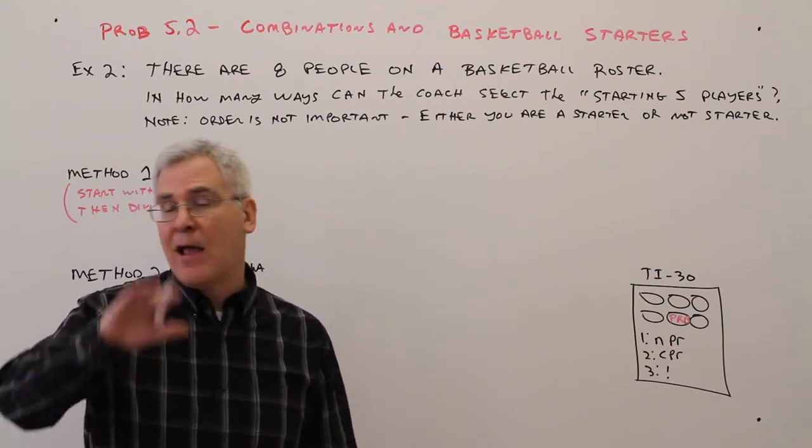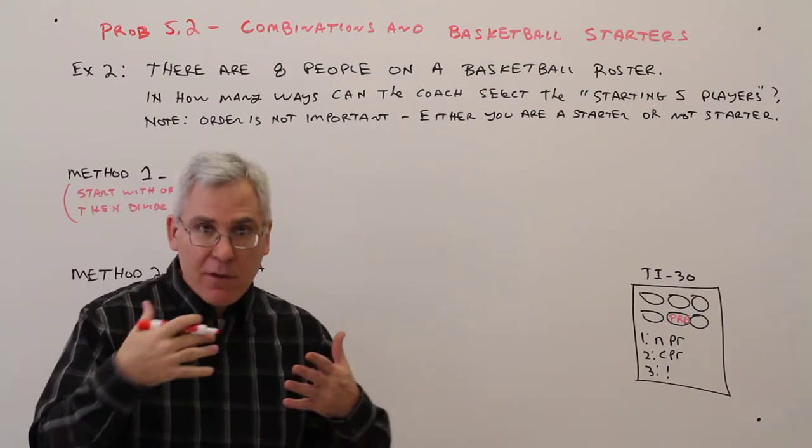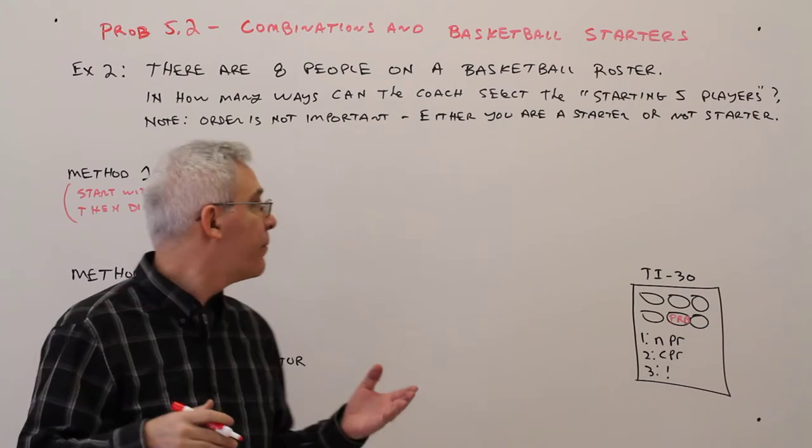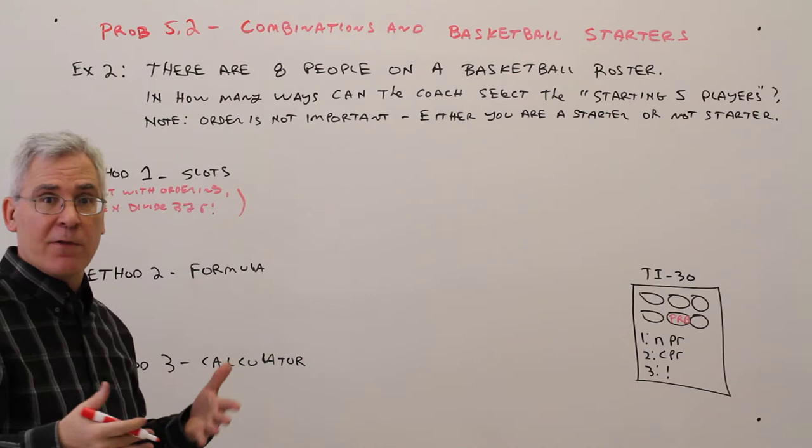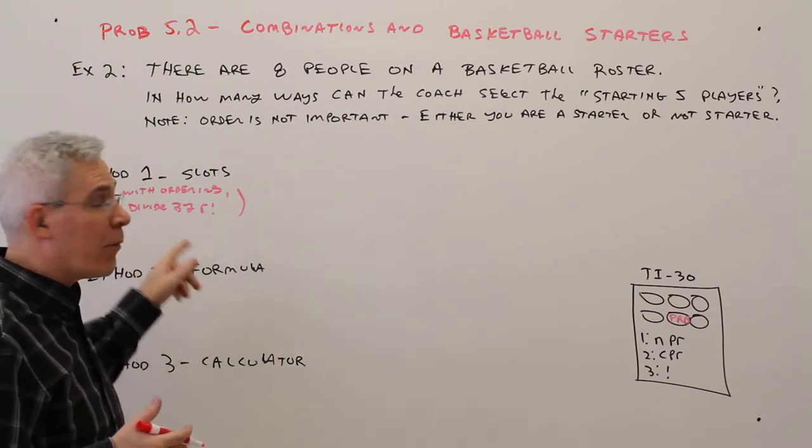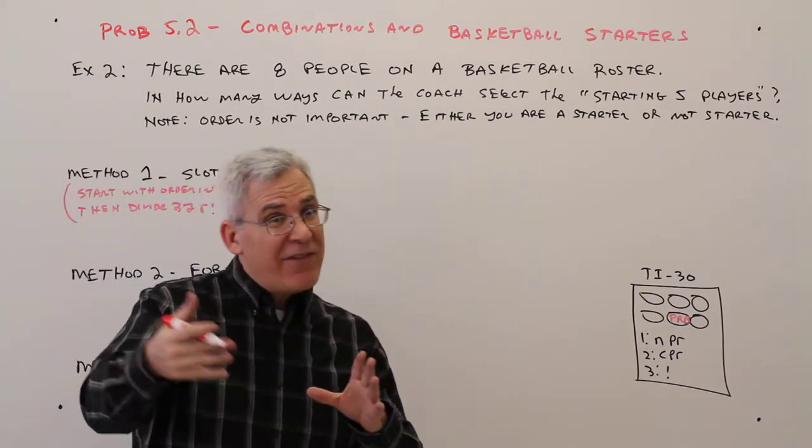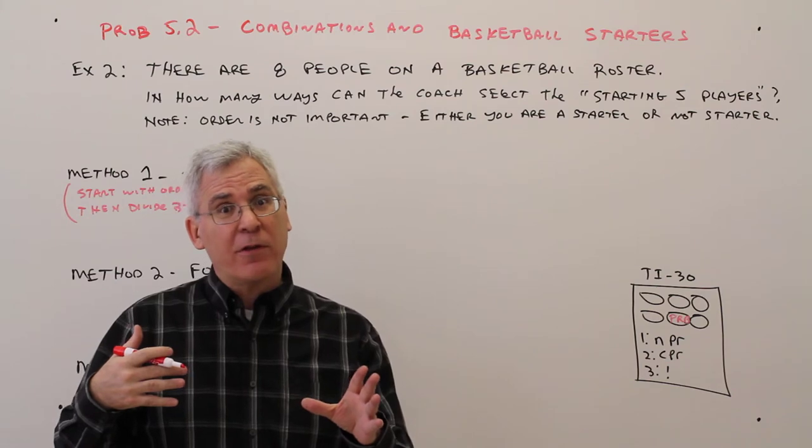Once again, it's not he picked me first. Starter or bench player. Alright, we're going to do it in 3 different ways. The first way is more intuitive, it's with slots, and we're going to start it out with ordering and then divide by that r factorial to cancel the ordering.